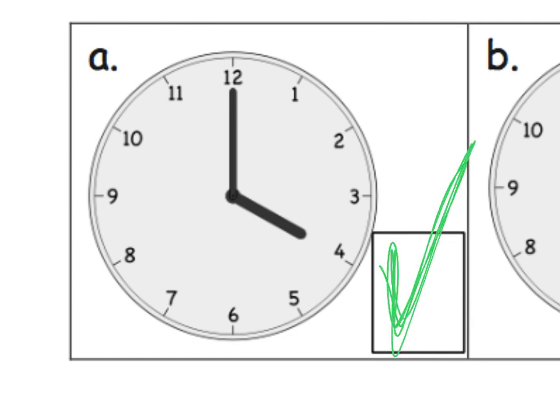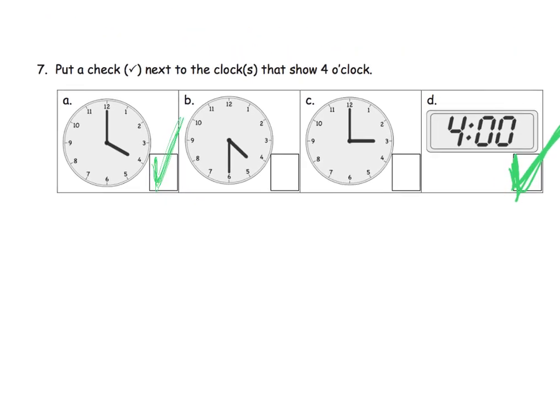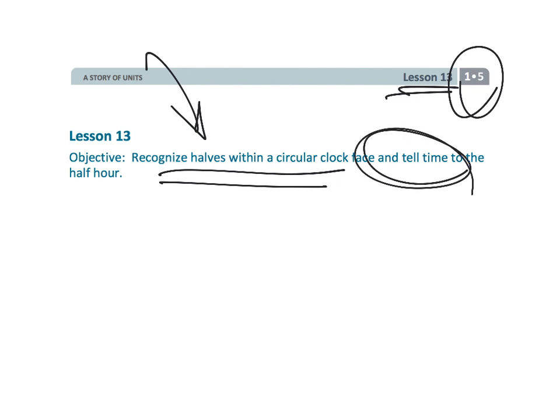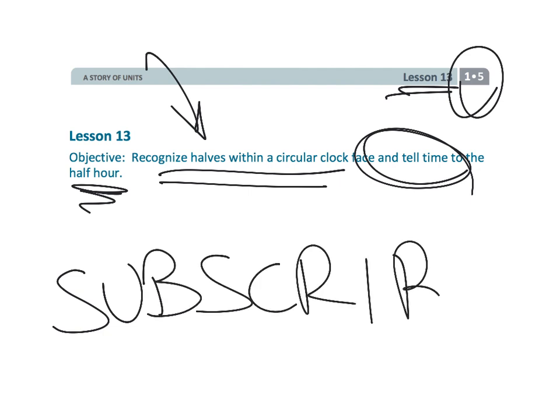And that is our last slide for that video. And that wraps up first grade, module 5, lesson 13, telling time. We've been looking at halves and connecting it to the fraction half. Earlier in the modules we were talking about quarters. But when we're telling time, we're only to the hour or the half hour. And, hey, if it's not too much trouble, consider subscribing to my channel.